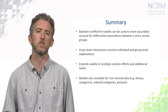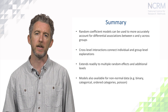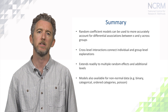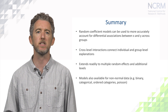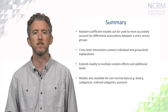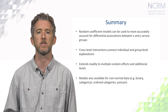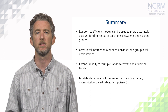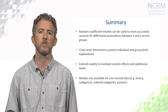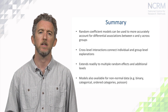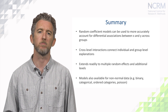To sum up, in this video we have introduced the random coefficients model. This relaxes the assumption of a random intercept model that the relationship between x and y will be the same in every group. Instead, we allow a residual difference in the magnitude of the coefficient for each group, and estimate their variance and covariance with the intercept. We can also use cross-level interactions to more directly model the connections between individual and group effects. Although these models have been introduced in relation to a continuous outcome, a two-level model and a single random coefficient, this generalises neatly to non-normal data, more than two levels, and multiple random terms.